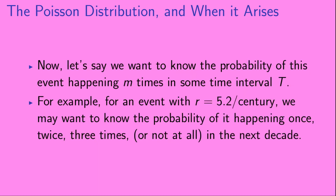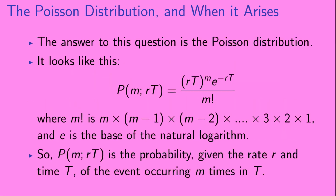Now, let's say we want to know the probability of this event happening m times in some time interval t. For an event with r = 5.2 per century, we may want to know the probability of it happening once, twice, three times, or not at all, in the next decade. The answer is the Poisson distribution. It looks like this: P(m | rt) = (rt)^m * e^(−rt) / m!, where m! is m times m−1 times m−2 down to 1, and e is the base of the natural logarithm. So P(m | rt) is the probability, given the rate r and time t, of the event occurring m times in t.